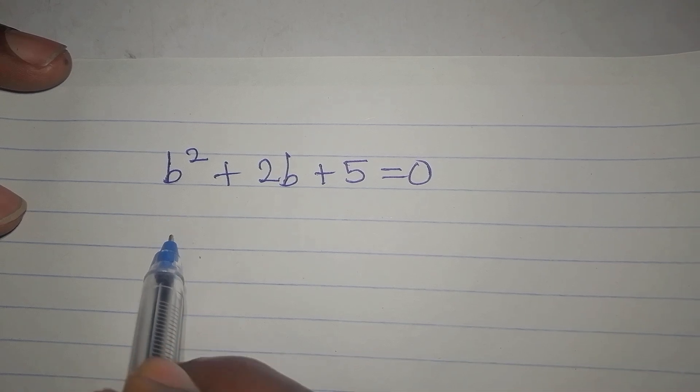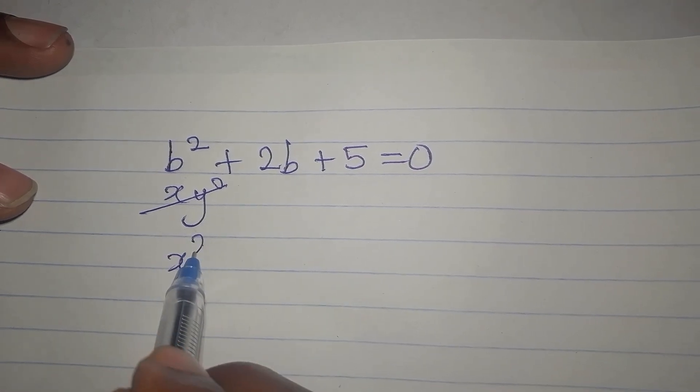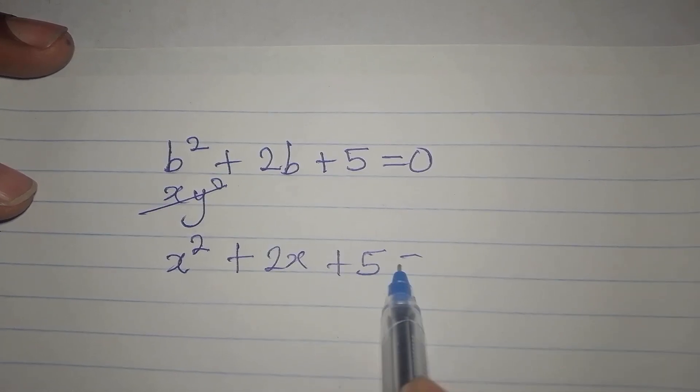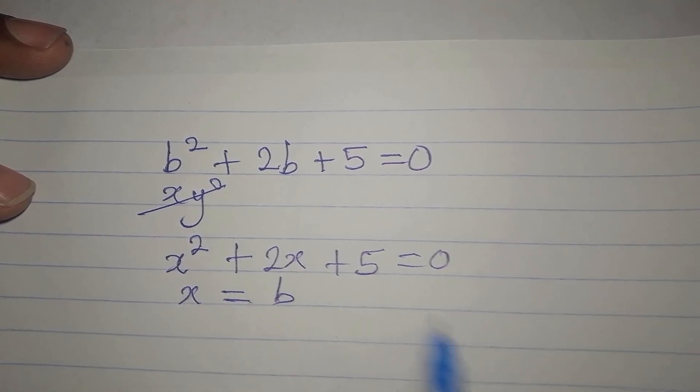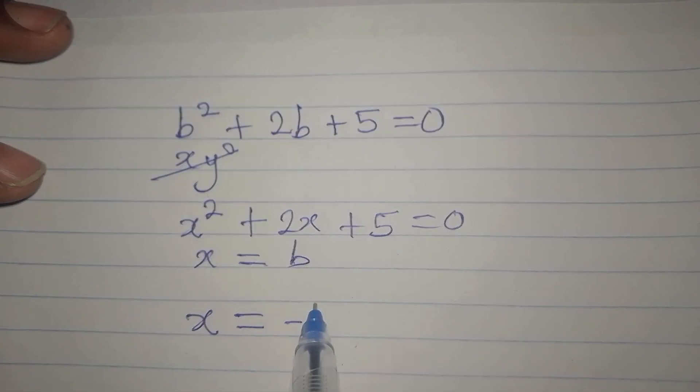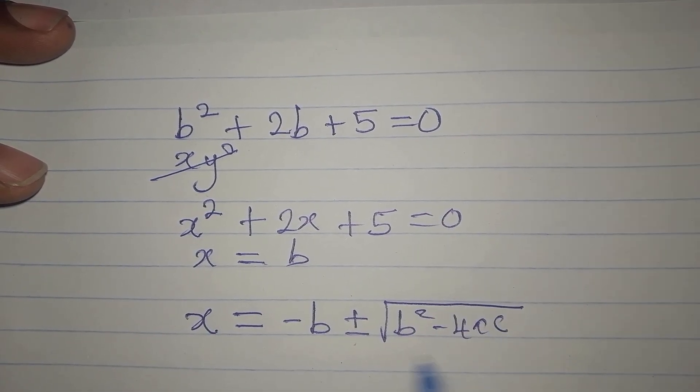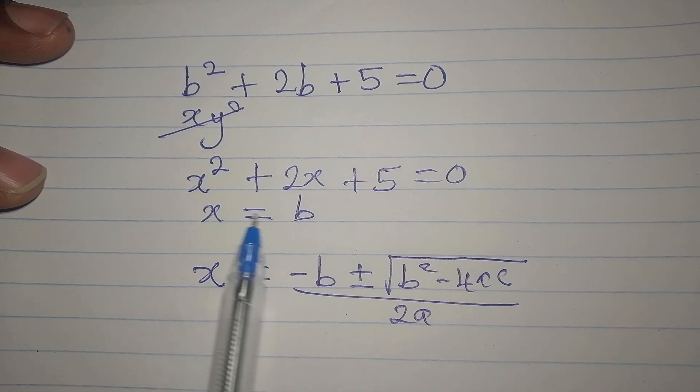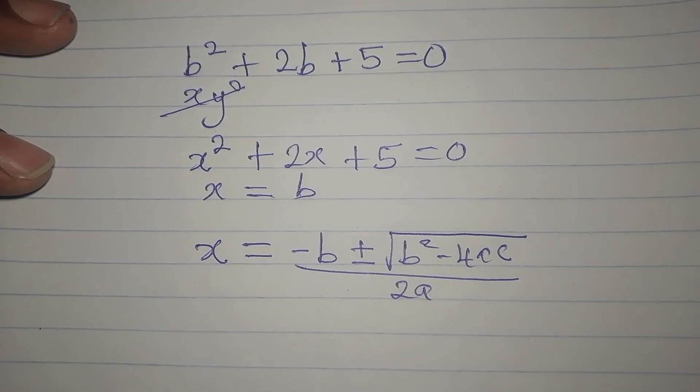Mind you, our x equals the b in the equation. We changed the variable because if we had used b here, it means we'd have b in two places, and that wouldn't be correct. Let's continue.